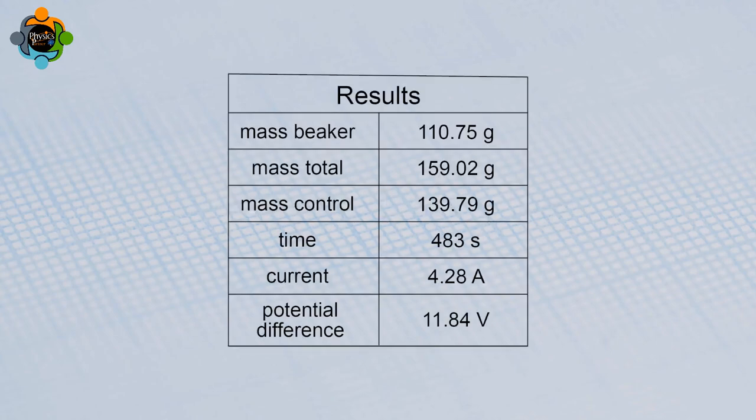To calculate the specific latent heat of fusion, we will use our recorded measurements of mass, time, current, and voltage. The electrical energy q given to the ice by the immersion heater can be calculated by multiplying together the current, time, and potential difference. Assuming all the electrical energy from the immersion heater is transferred to the ice.